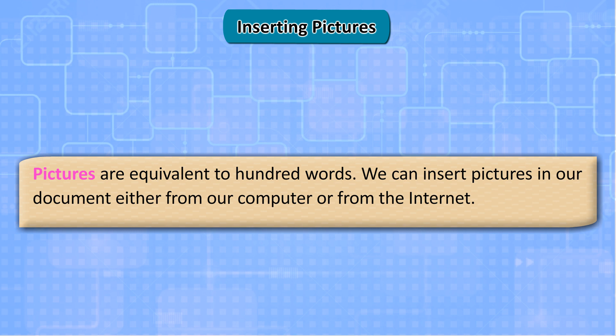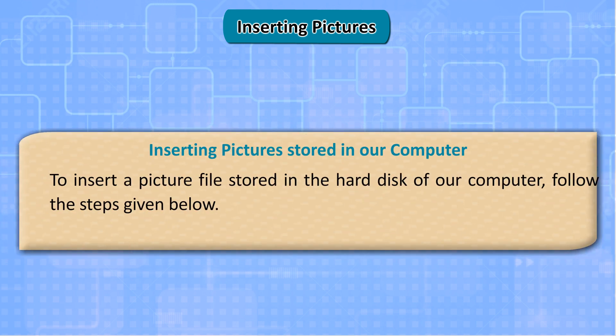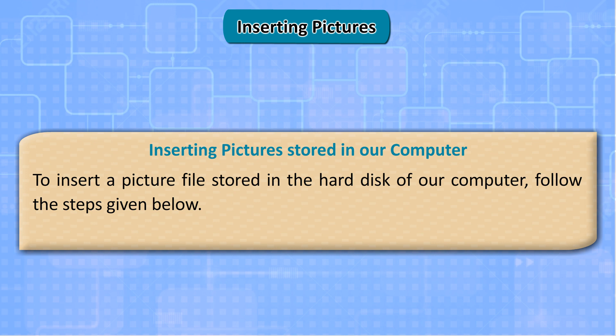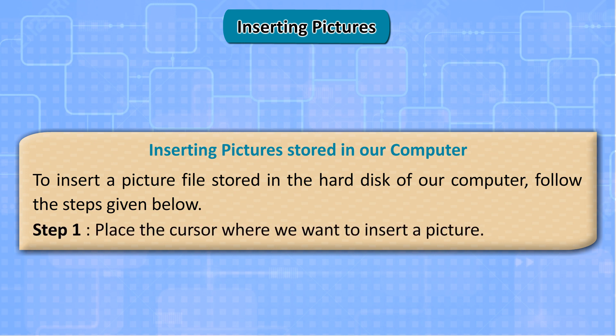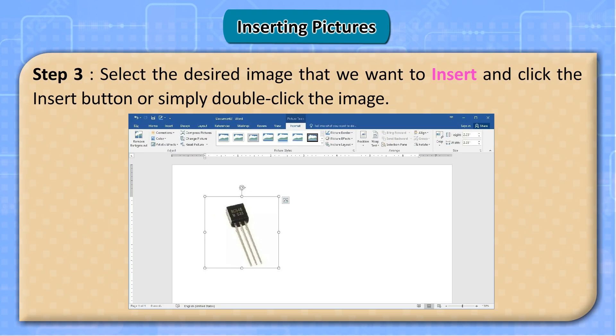Inserting Pictures. Pictures are equivalent to 100 words. We can insert pictures in our document either from our computer or from the internet. To insert a picture file stored in the hard disk of our computer, follow the steps given below. Step 1: Place the cursor where we want to insert a picture. Step 2: Click the Insert tab and then click the Pictures button in the Images group. The Insert Picture dialog box appears. Step 3: Select the desired image and click the Insert button, or simply double-click the image.